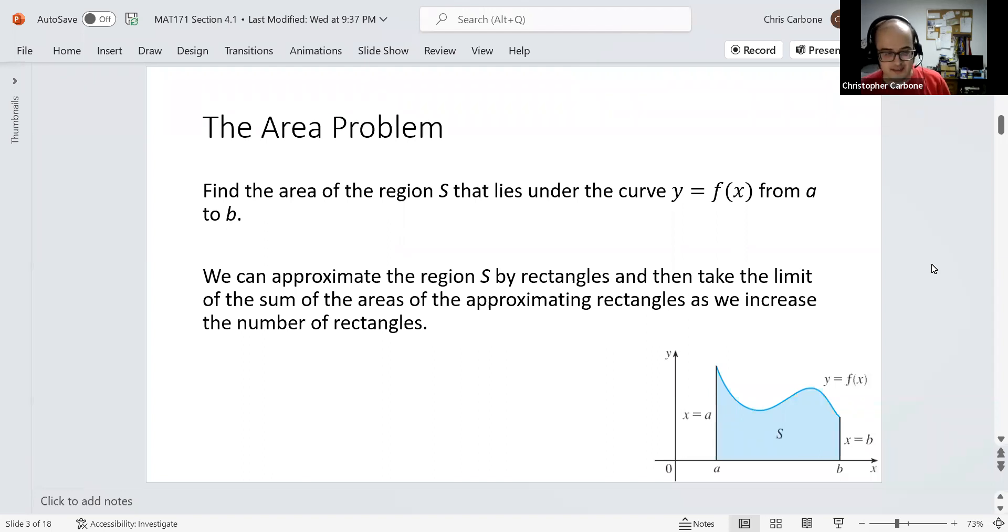For example, let's say we wanted to find the area under a curve. We could call it region S that lies under the curve y equals f of x, like in this picture in the bottom right-hand corner, existing from point a to point b on the x-axis. We have a clearly defined area with those specific specifications. We could approximate this region S by, in this particular case, rectangles would fit better than triangles. So we could use rectangles to find this and then take the limit of the sum of the areas of the approximating rectangles as we increase the number of rectangles.